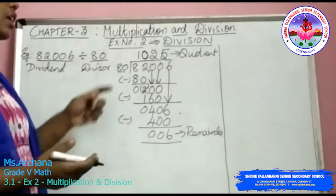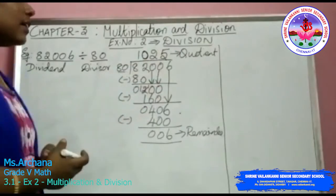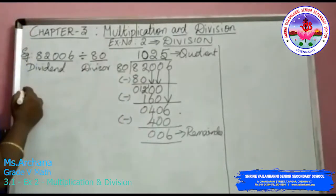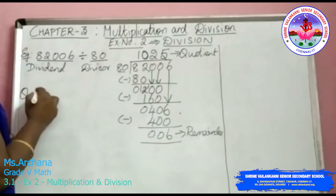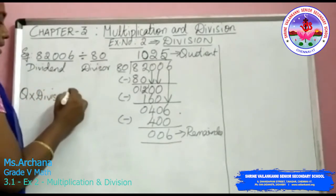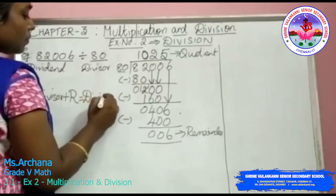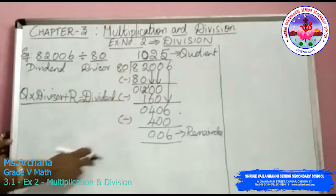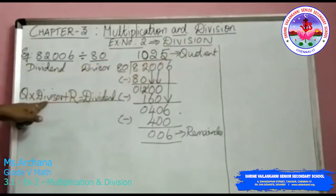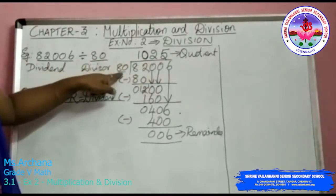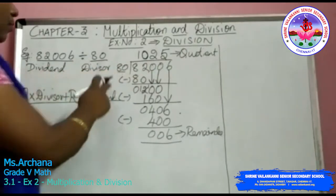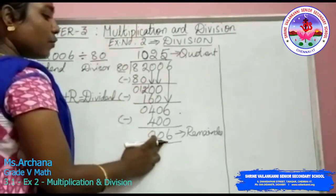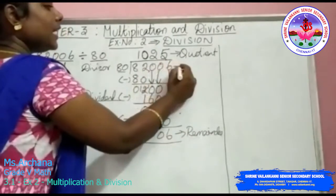After doing the division, you can check your answer. To check your division value, you can do multiplication: quotient into divisor plus remainder gives you the dividend. This is the formula to check your answer. The quotient is your top value, the divisor is the value outside the symbol. If you multiply these two values and then add the remainder, you will get the dividend value.